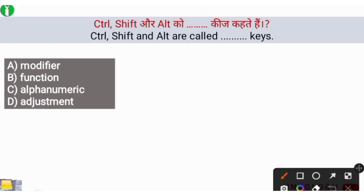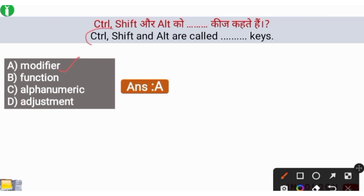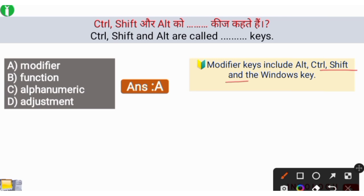Next question: CTRL, Shift, and ALT are what type of keys? The right answer is option number A, modifier keys. CTRL stands for control key, and ALT stands for alternate. So, control key, shift, and alternate keys are examples of modifier keys. Additionally, the Windows key is also an example of a modifier key.